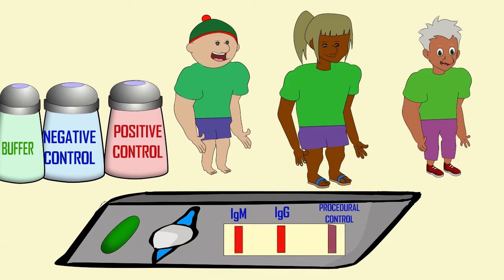If we see two red lines appear for IgM and IgG, this indicates that this patient has been exposed to coronavirus and is making both types of antibodies, which I'll explain in a second.